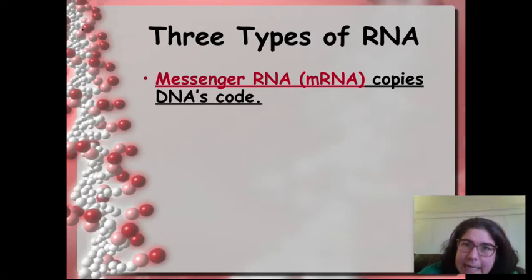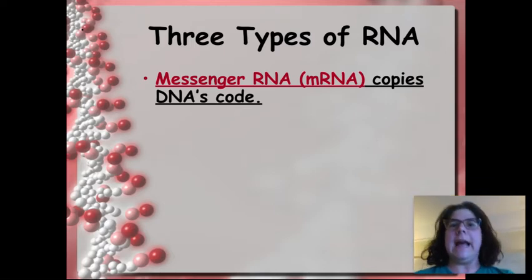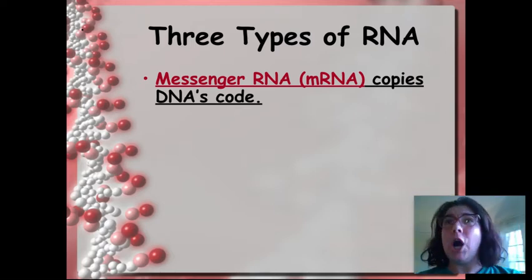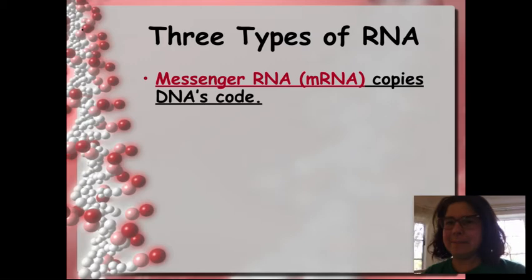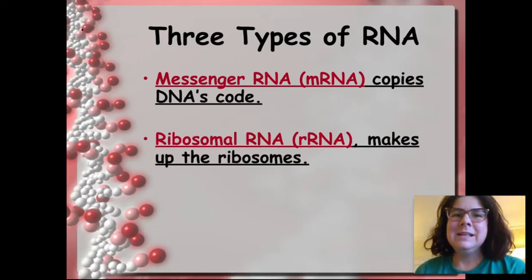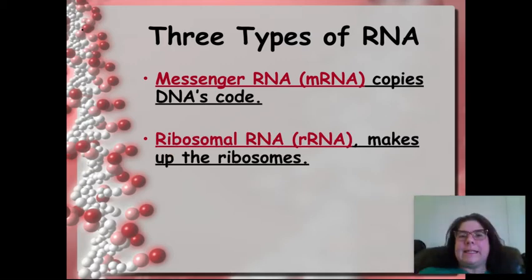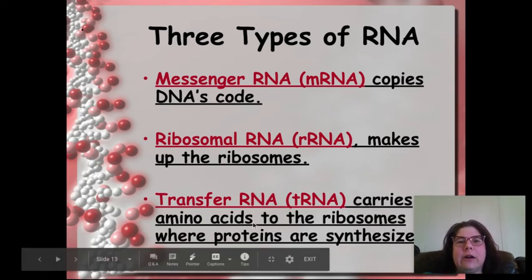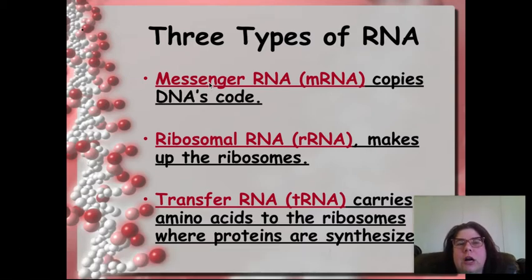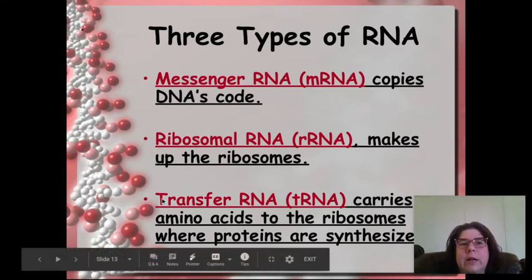There are three types of RNA. There's messenger RNA. Messenger RNA copies the DNA code. And so inside the nucleus, that's what's going to be copying the DNA. Ribosomal RNA makes up the ribosomes. And then transfer RNA, tRNA, carries the amino acids to the ribosome. So these are going to be found out in the cytoplasm. Messenger RNA will start out in the nucleus and then head out to the cytoplasm. We're going to focus mostly on mRNA and tRNA at this level.